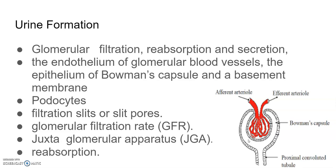Blood is filtered so finely that almost all plasma constituents except proteins pass into the lumen of Bowman's capsule — this is therefore called ultrafiltration. The amount of filtrate formed by the kidneys per minute is called the glomerular filtration rate (GFR). In a healthy individual, GFR is approximately 125 milliliters per minute, or 180 liters per day. The kidneys have a built-in mechanism for regulation of GFR, carried out by the juxtaglomerular apparatus.